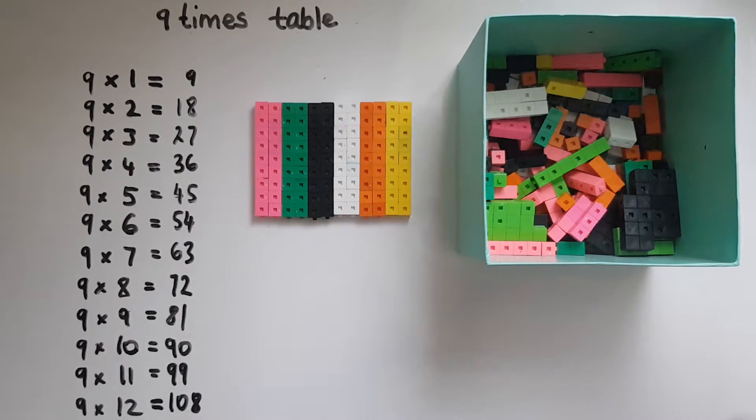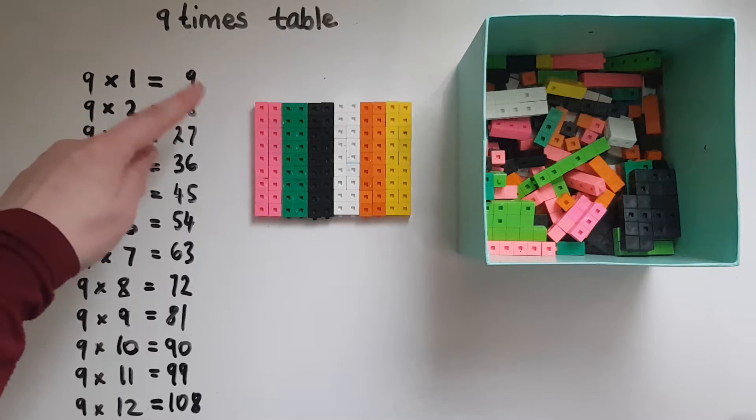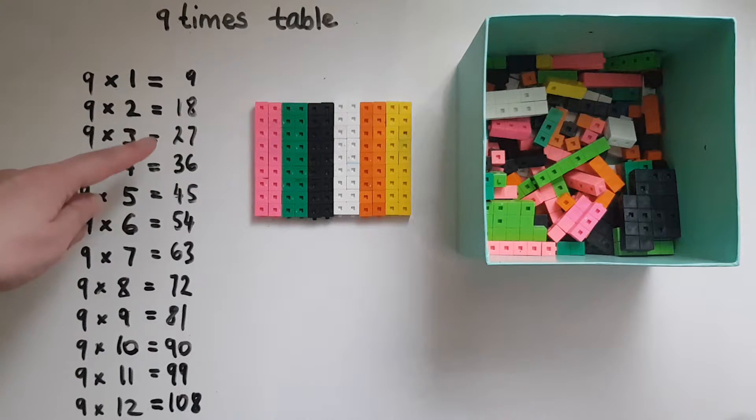You'll have noticed in the pattern that we're adding 9 each time. So 9 adding another 9 gives us 18, and another 9 is 27, and another 9 is 36, and so on.